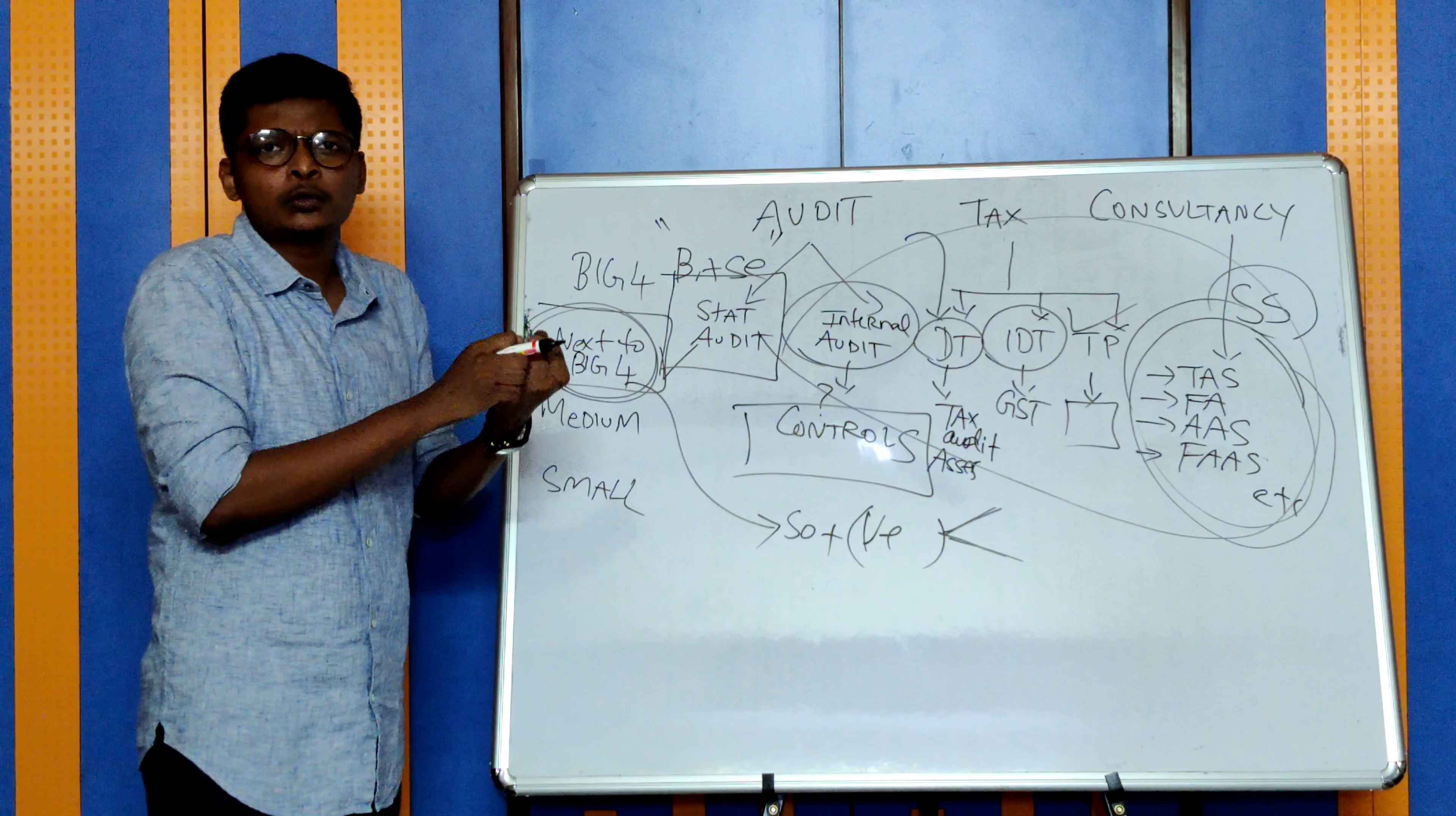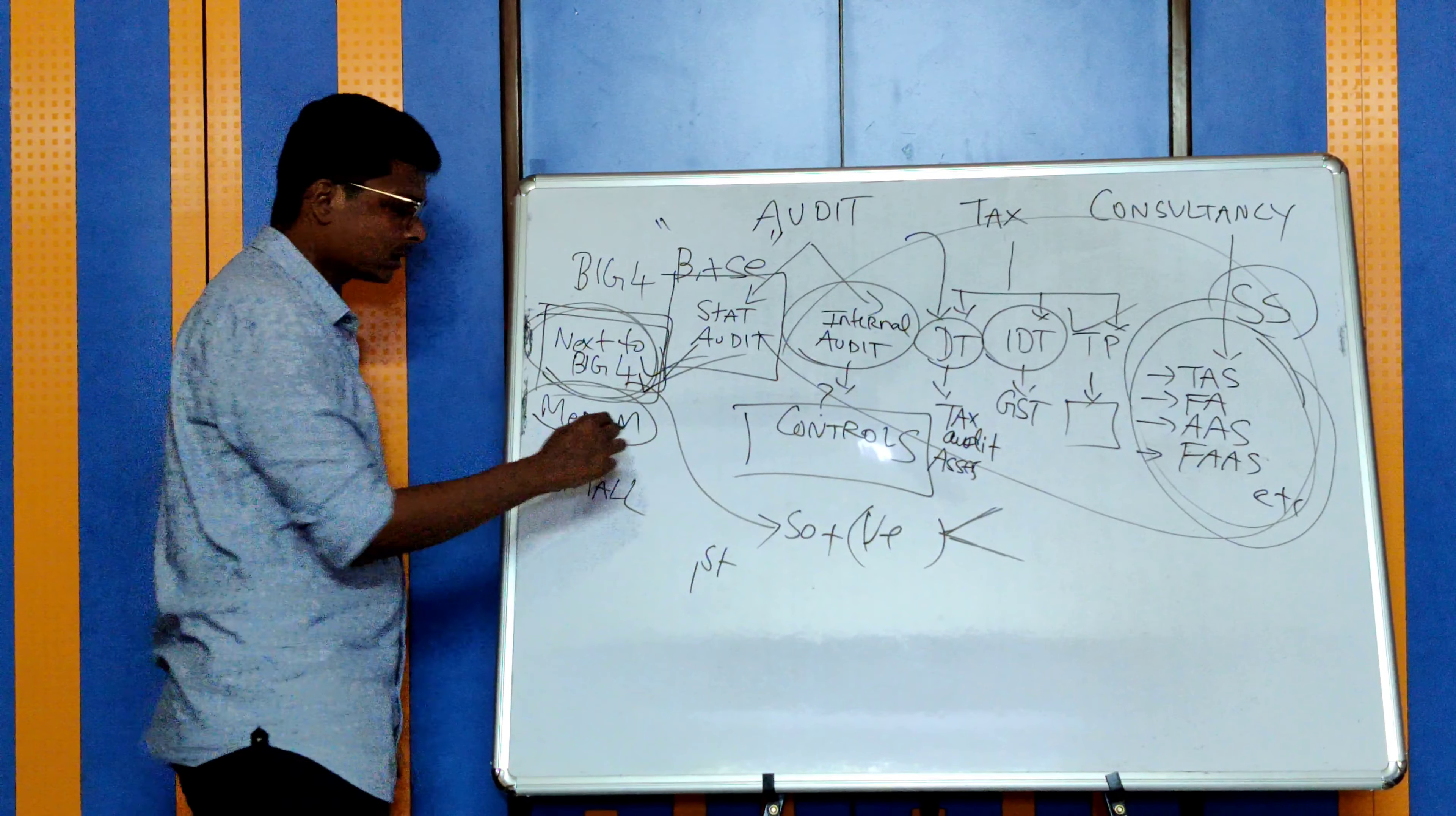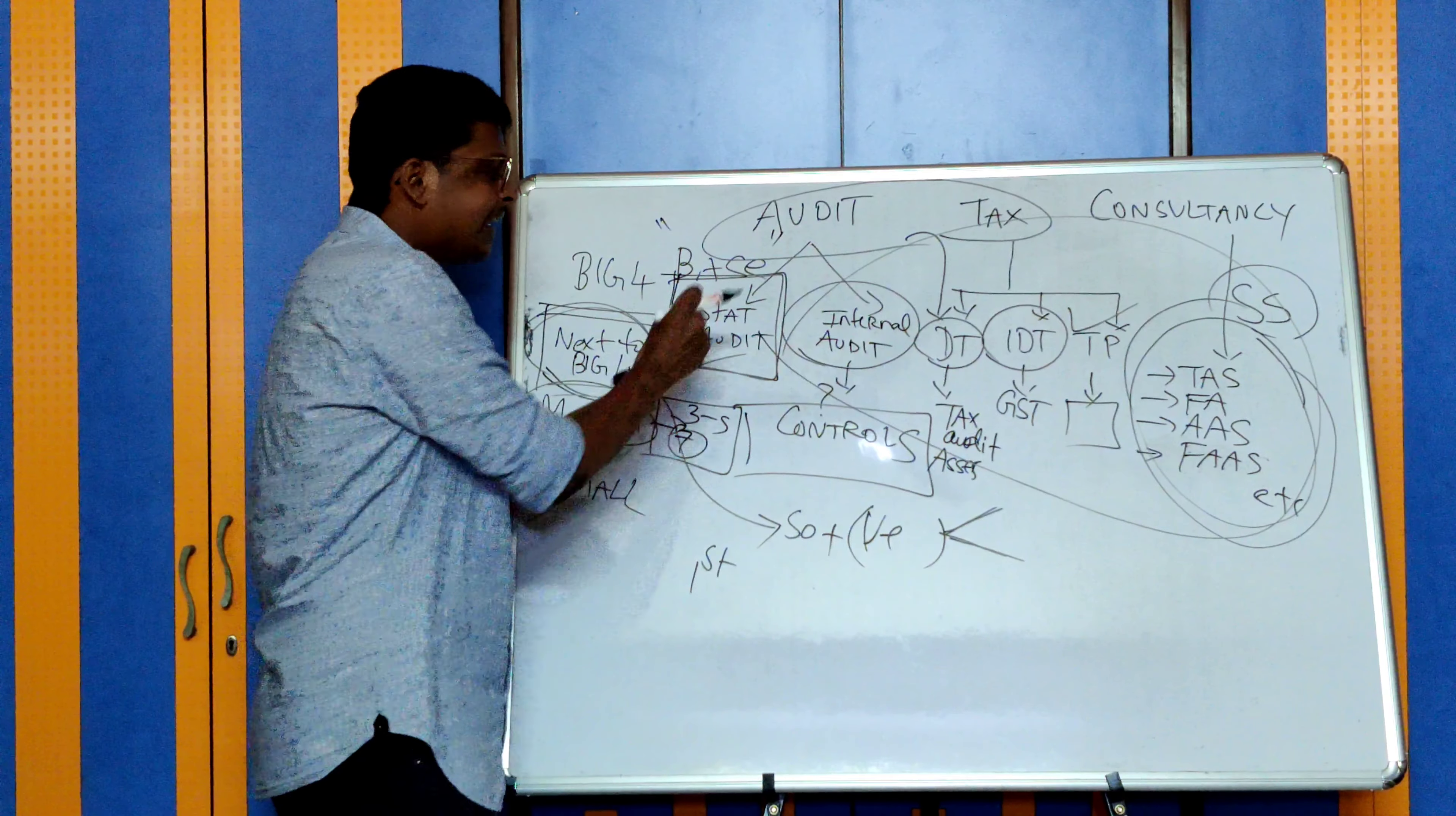Those who don't get into Big Four can always go for these next to Big Four firms and you learn a lot here also. Next, coming to medium-sized firms - firms with three to seven partners, growing firms from the last 10 years, startups. What do you learn here? Majorly you will be learning statutory audit, maybe a little bit of internal audit and taxation. Mostly in these firms they won't have departmentalization, so based on engagement you will be put into statutory audit, internal audit, or any tax engagement.